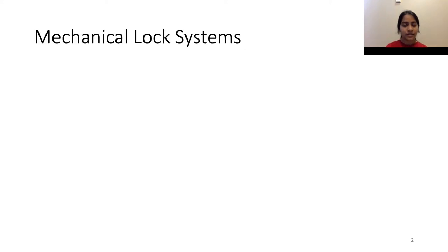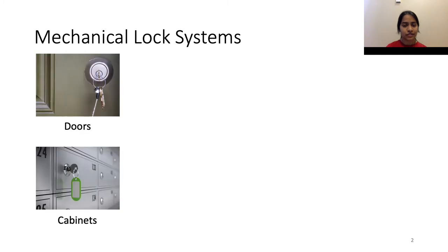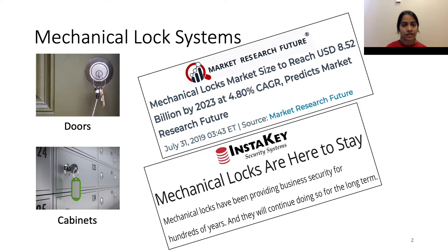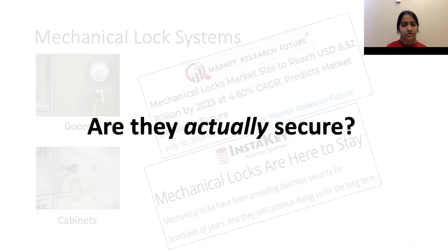Today, mechanical lock systems are a popular solution for securing doors and cabinets of several commercial buildings and residences. Further, several reports predict the prevalence of these systems even in the future. Hence comes an important question: are these systems actually secure?